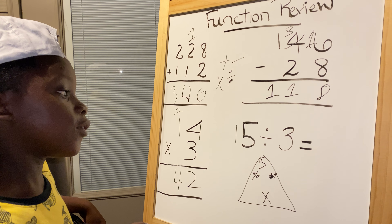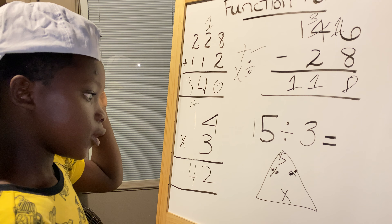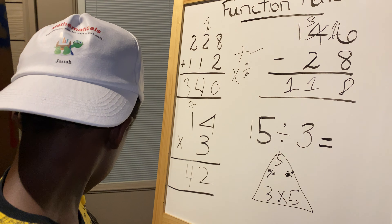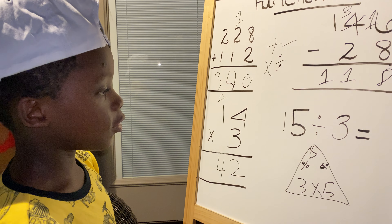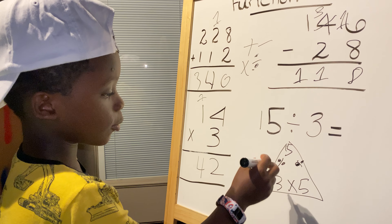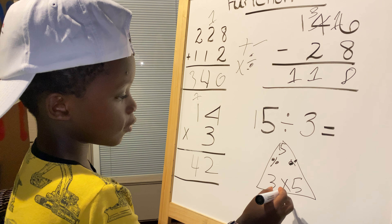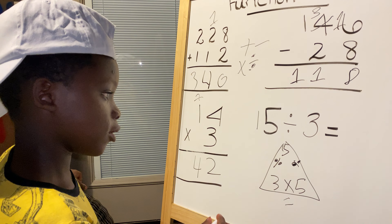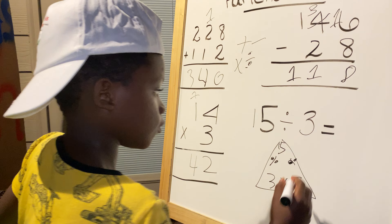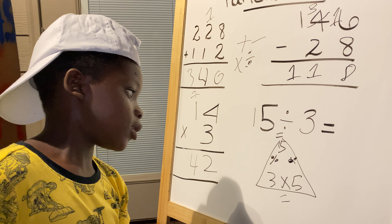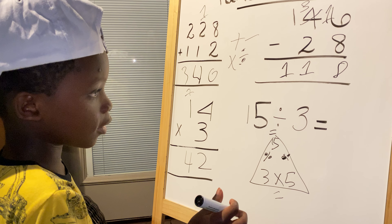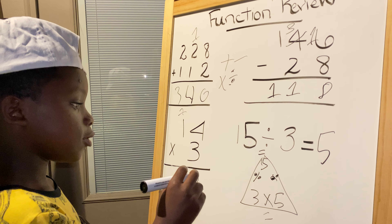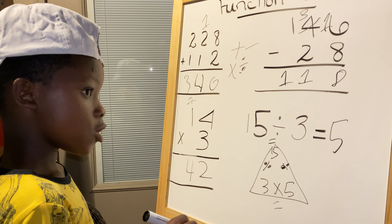Three times five equals fifteen. So fifteen divided by three equals five. Let's pretend there's an equal sign — that'll make it simpler for you guys. Three times fifteen divided by three equals five. Five times three again!